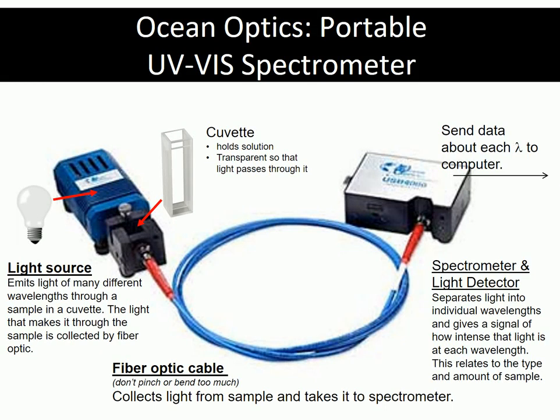In this video we're going to learn a little bit about how colored samples are analyzed on a spectrometer. This is a picture of an Ocean Optics portable UV-VIS spectrometer.